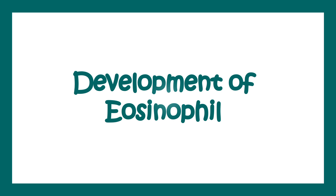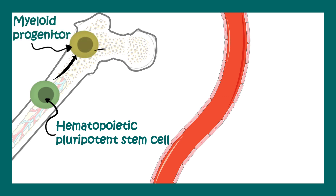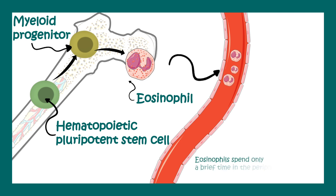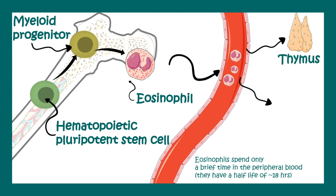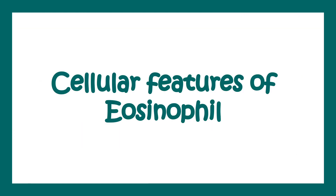Eosinophil is formed from the hematopoietic pluripotent stem cell, which gives rise to the myeloid progenitor, and from the myeloid progenitor Eosinophils are generated. Once generated they are secreted into the bloodstream, but inside the bloodstream they only stay for about 18 hours. They then move to tissues like the thymus or the GI tract and play a vital role in these particular locations.